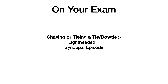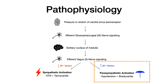If you're on your exam and they tell you this guy is shaving and then all of a sudden he faints, and they ask what is the mechanism or pathophysiology — the answer is they accidentally put pressure on their carotid sinus, which was hypersensitive. It went down this pathway, activated the parasympathetic nervous system, their blood pressure dropped so low that they syncopized. That's carotid sinus hypersensitivity.